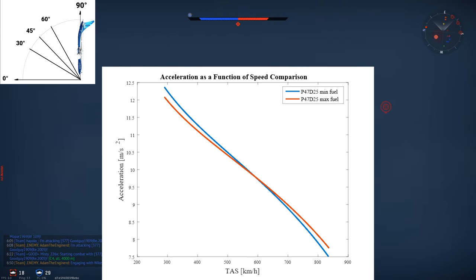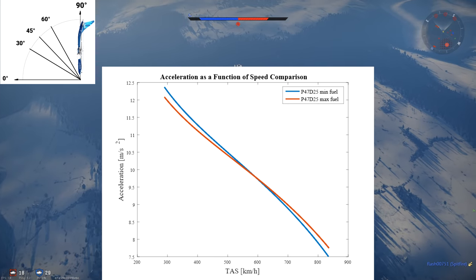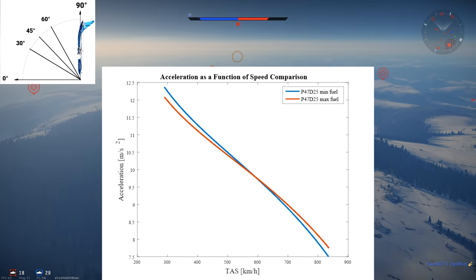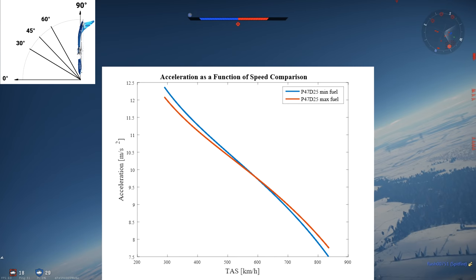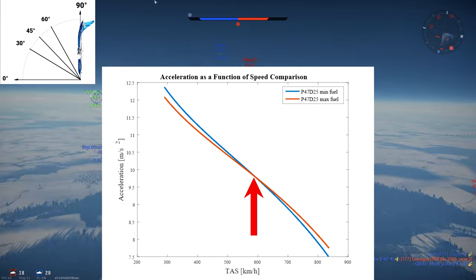Already we can see that the myth of heavier aircraft diving better than lighter aircraft is not always true. As speed increases however, the acceleration advantage of the lighter P-47 reduces, until both aircraft accelerate equally well at 590 kilometers per hour with an acceleration of 9.8 meters per second squared at this speed.